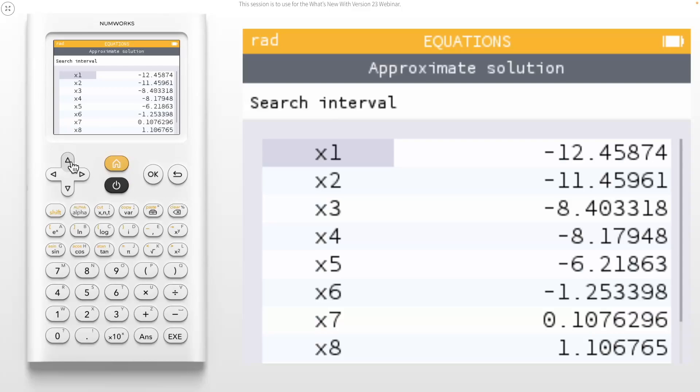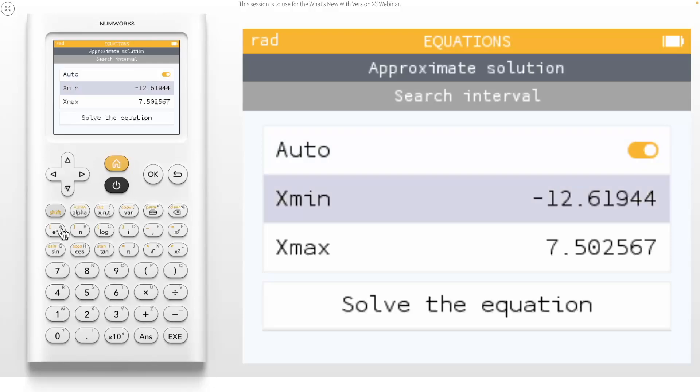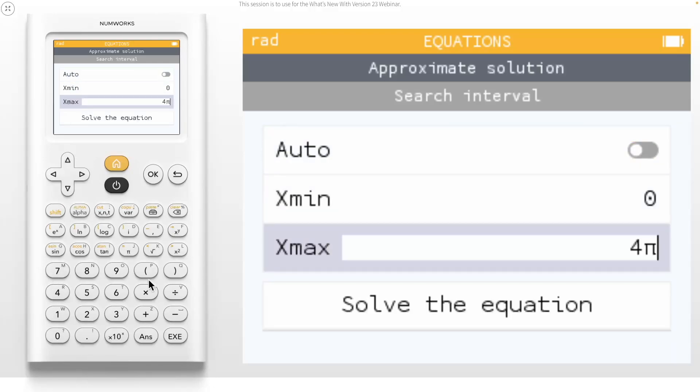For example, if your application problem only applies over a specific interval, navigate up to search interval to choose the limits. Say 0 to 4 pi.